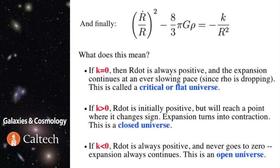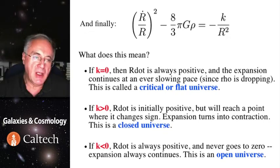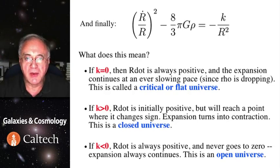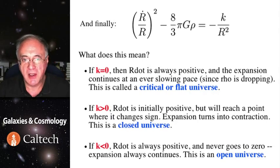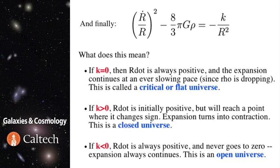So, finally we get this result. And let's take just inspection of this. If k is zero, as it could be, then r dot must be always positive, because you move the gravity term to the right side, and the expansion goes forever. But it slows down, because the density goes down. This is so-called critical or flat universe.